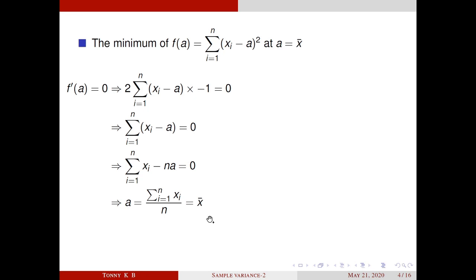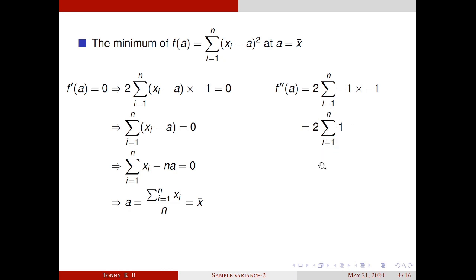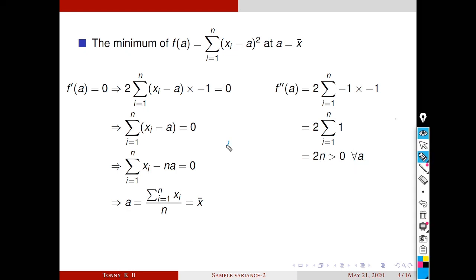Next, we check whether x̄ is a minimum or maximum point. For that, we consider the second derivative: f''(a) = 2 · Σ(-1)·(-1) = 2 · Σ1 = 2n. It is clear that 2n is always positive, whatever the value of a. So in particular, f''(x̄) is positive. Therefore, by the second derivative test, f(a) has a local minimum at x̄.